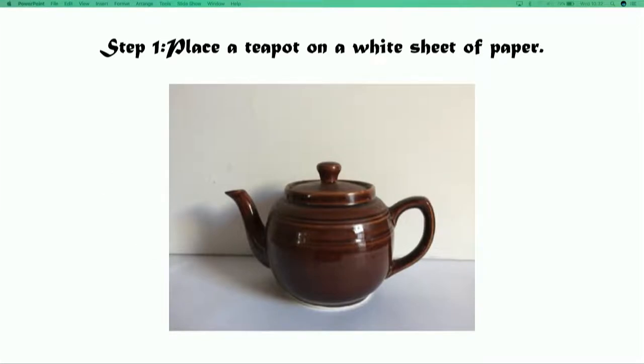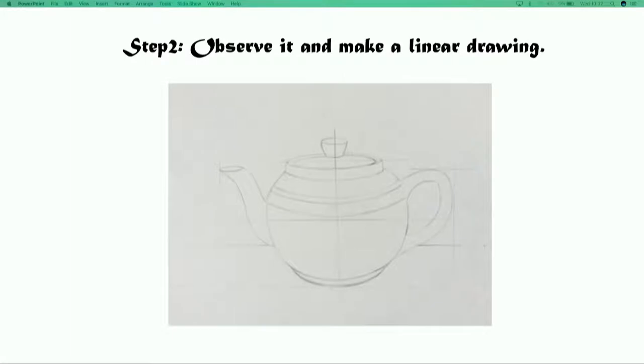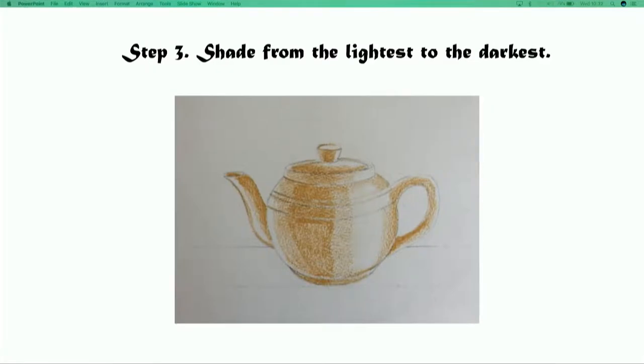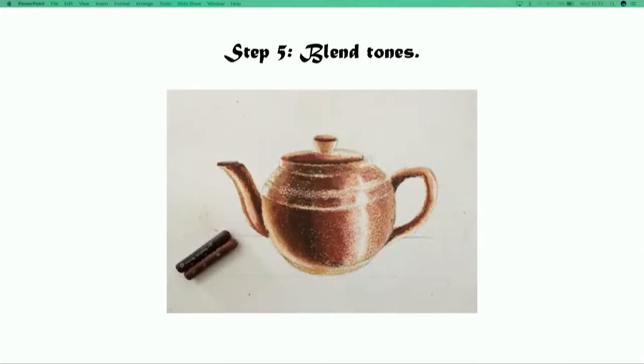Place a teapot on a white sheet of paper. Observe it and make a linear drawing. Shade from the lightest to the darkest. Apply darker tones. Blend tones. Put the coarse shadow.